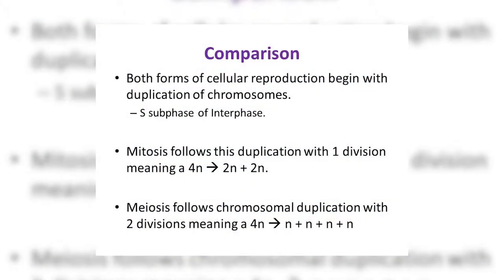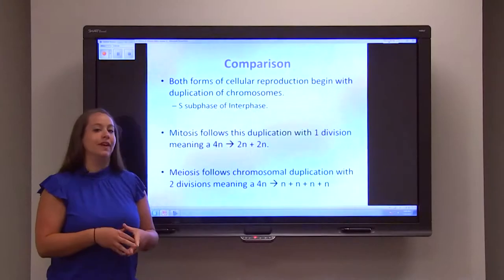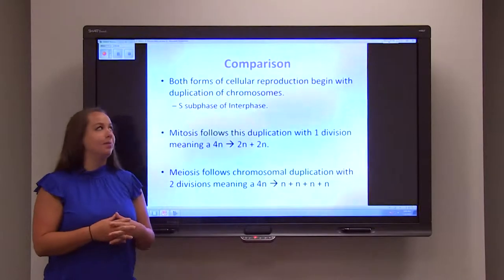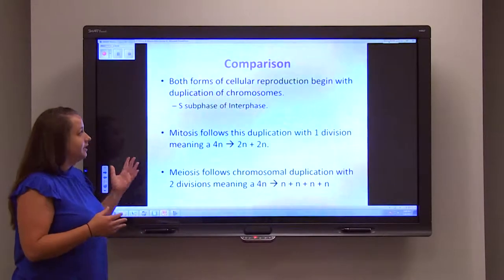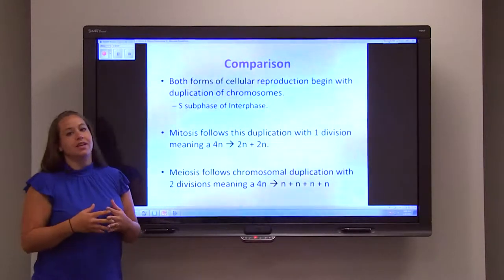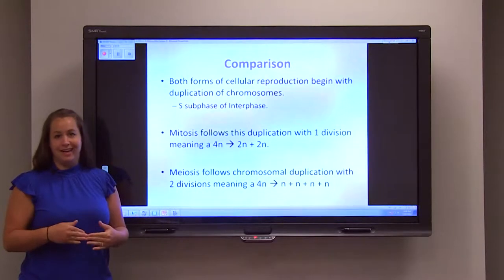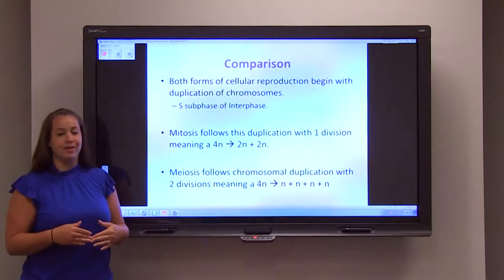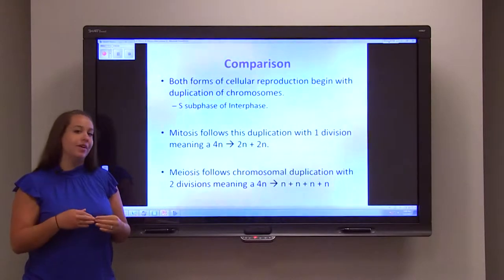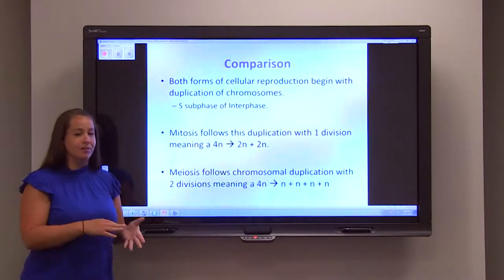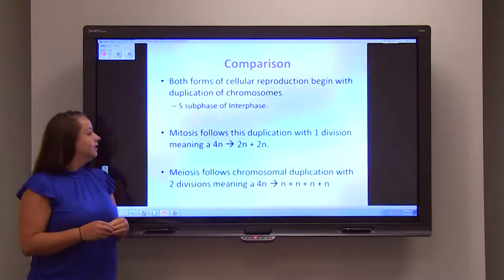Another comparison between the two is that they both start off in interphase. They go through the same G1, S, and G2 phases that comprise interphase. During the S phase, there is duplication of DNA — duplication of all that chromatin from 2N to 4N.